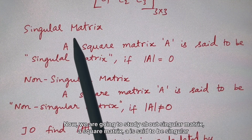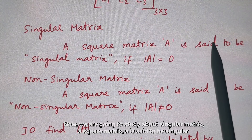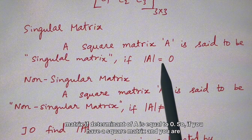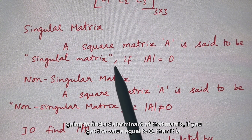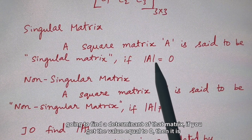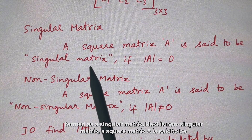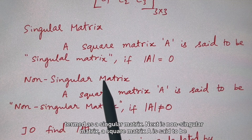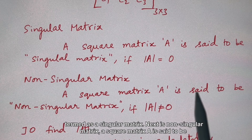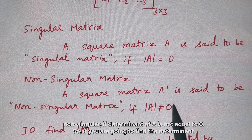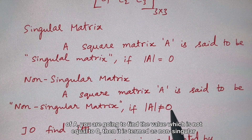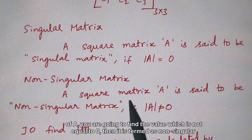Now we study singular and non-singular matrices. A square matrix A is said to be a singular matrix if the determinant of A equals 0. If the determinant equals some non-zero value, then it is termed a non-singular matrix.